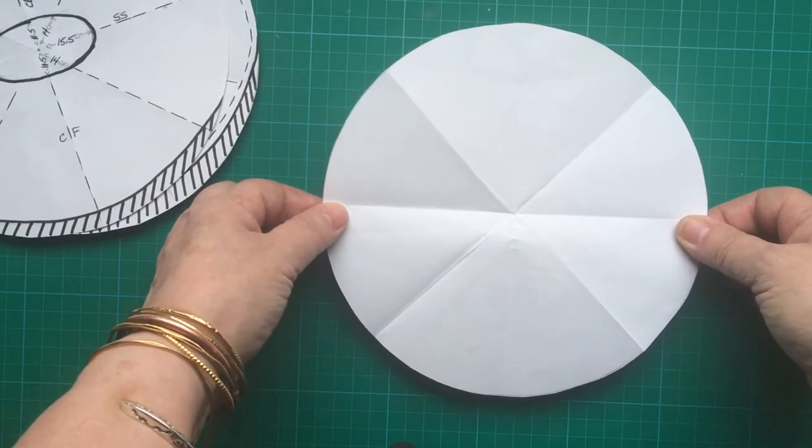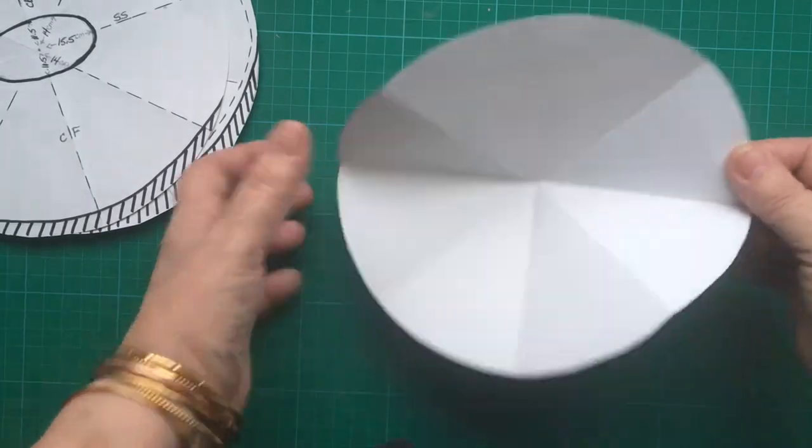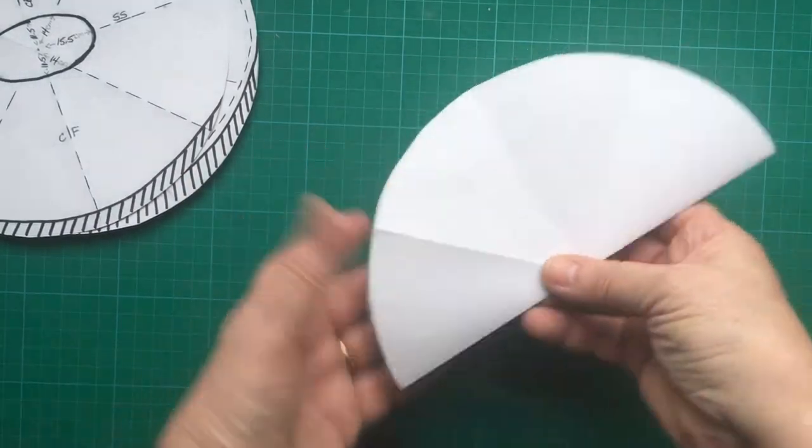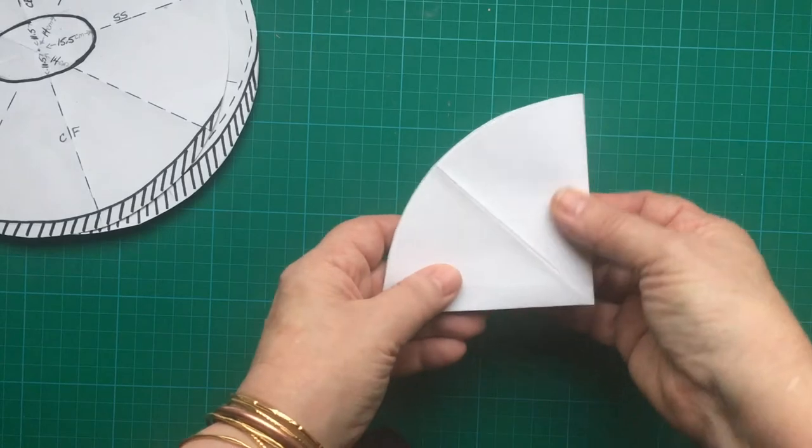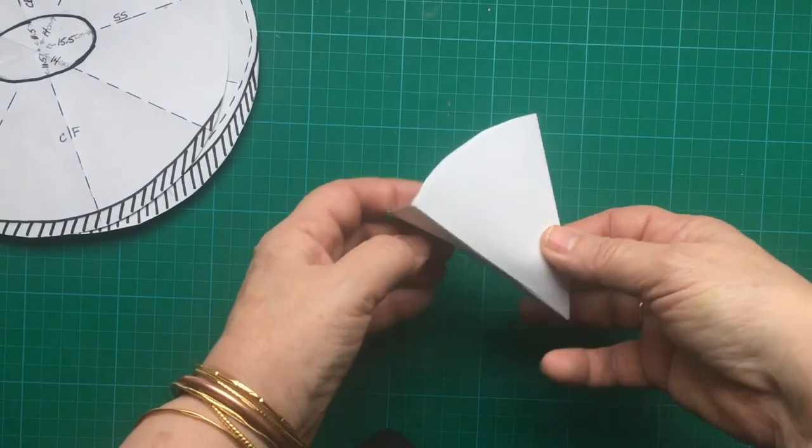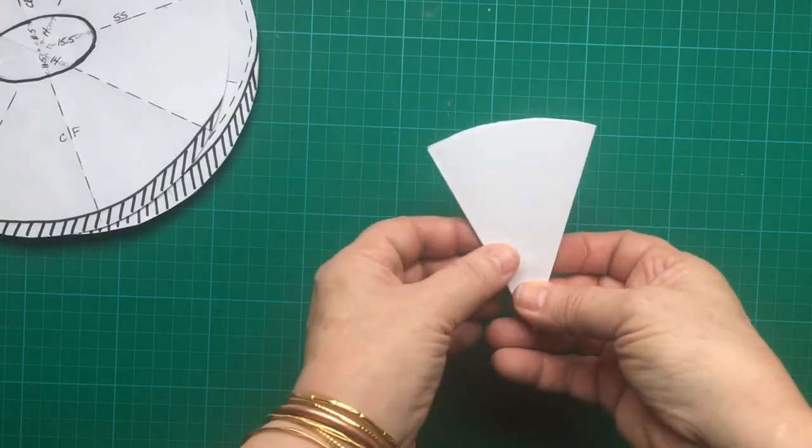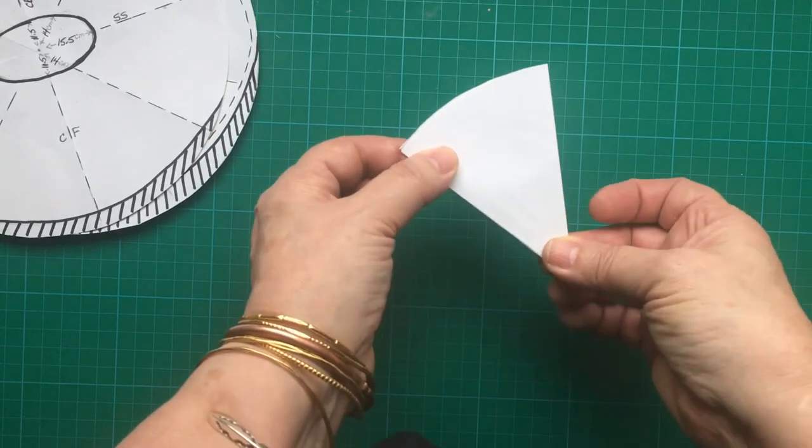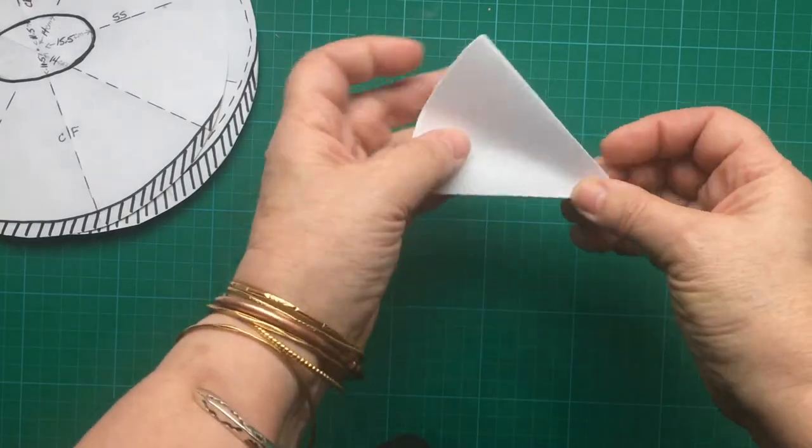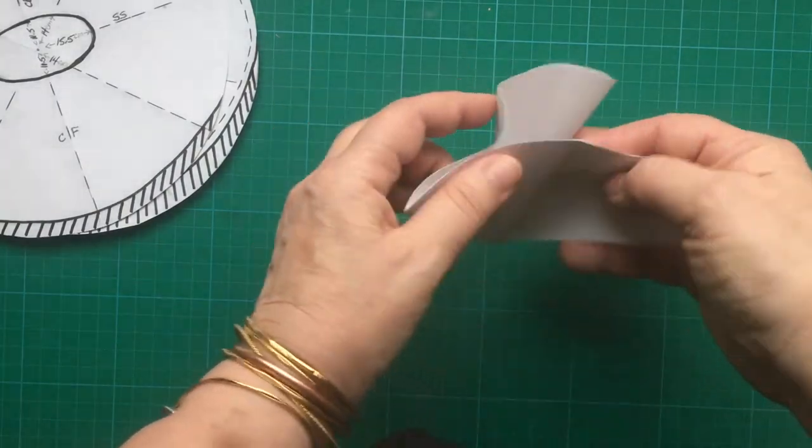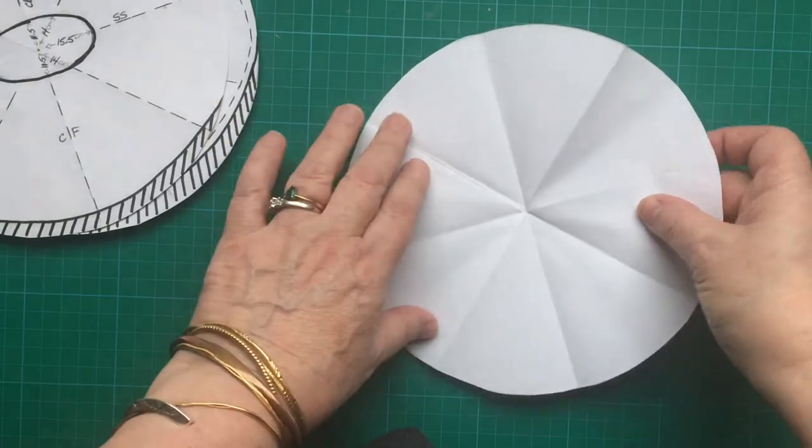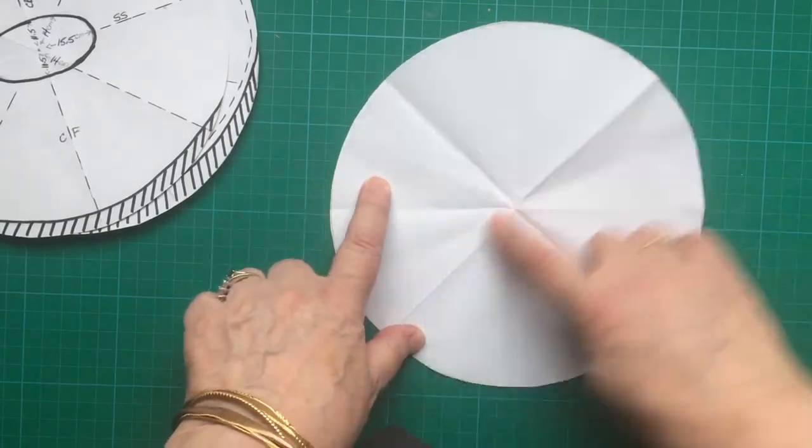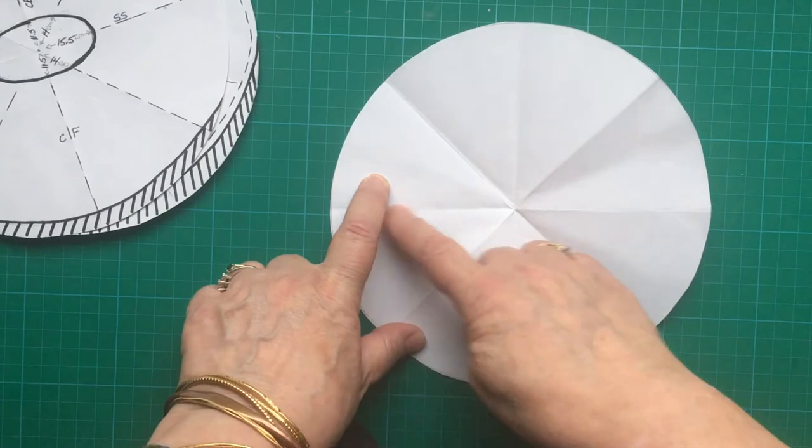You can do it in a whole circle or just do half and fold it. Fold it in half then in quarters and then into eighths and if you want it again you could do it to sixteenths. Open it up and that gives you all your lines and they're all symmetrical.